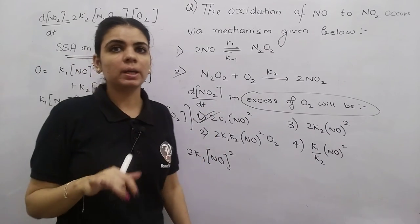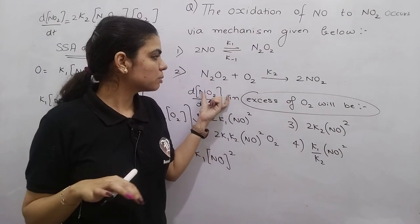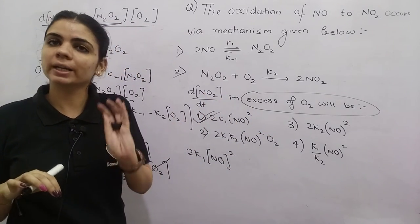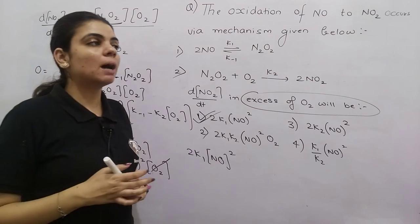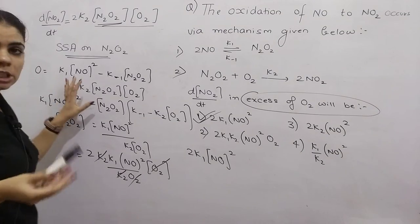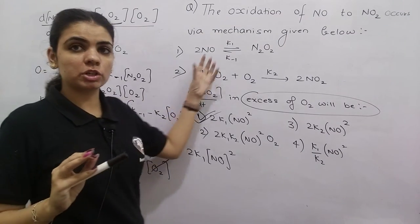Basically what did we do? First we wrote the rate equation for what was asked. Then found which is the intermediate. After finding the intermediate, you can eliminate that intermediate using steady state approximation.